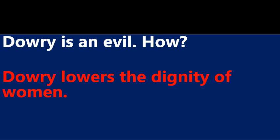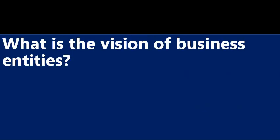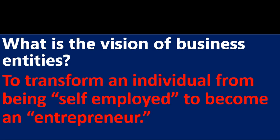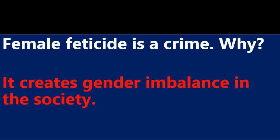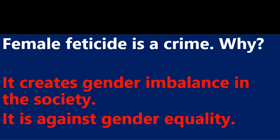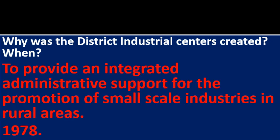Dowry is an evil — how? Dowry lowers the dignity of women and is against the self-respect of her. What is the vision of business entities? To transform an individual from being self-employed to become an entrepreneur. Female feticide is a crime — how? It creates gender imbalance in the society and is against gender equality. Why was the District Industrial Center created? To provide integrated administrative support for the promotion of small-scale industries in rural areas. It was started in 1978.